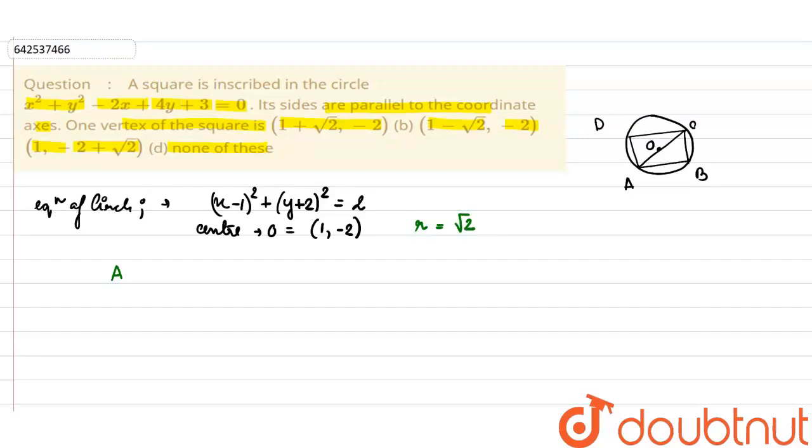Now we know that as the center is O, we can say that AO = OC = √2.